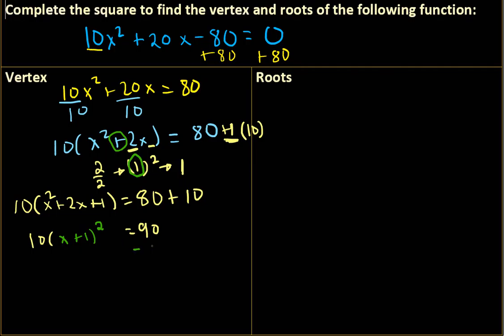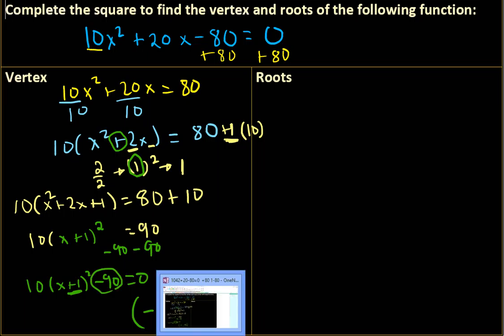So now we need to move this over so it's in vertex form. So we have 10 times x plus 1 squared minus 90 equals 0. And there's our vertex. We take the opposite of this, which is negative 1, and then we keep this one, so that's negative 90. And there's our vertex.